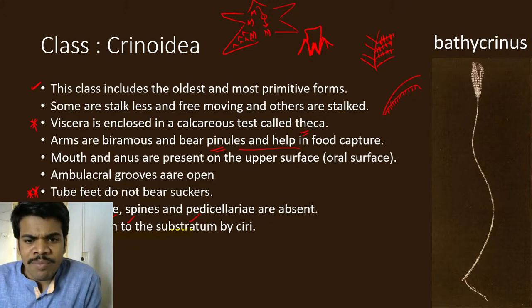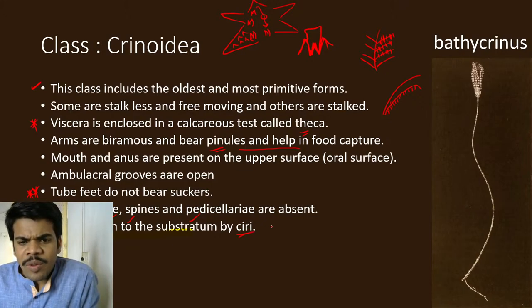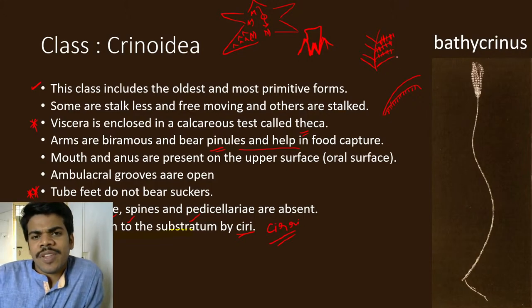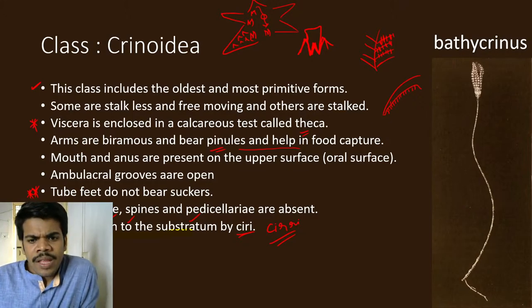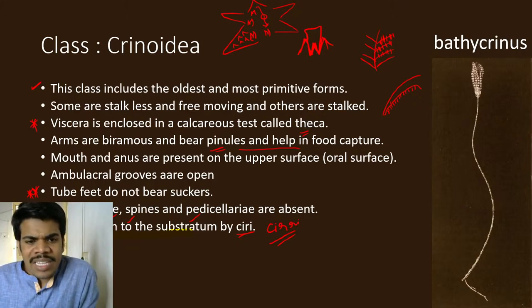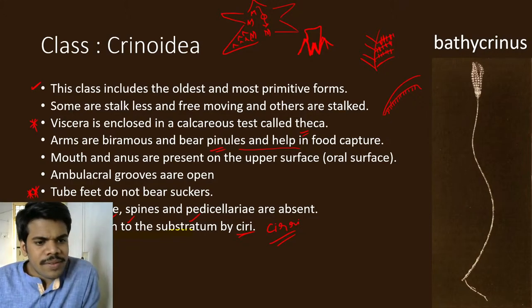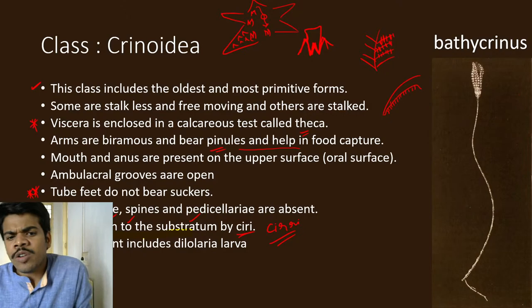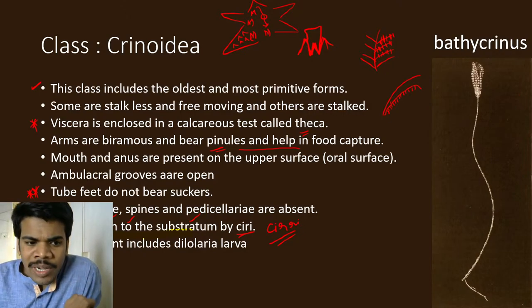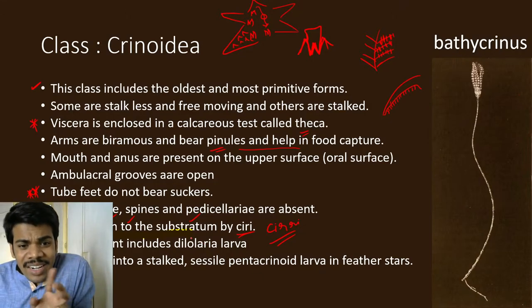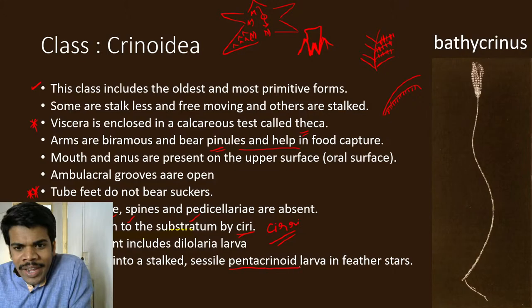Some attach to the substratum by cirri — very, very important. Cirri is a cilia-like or hair-like structure which helps in attachment or movement. Development includes Doliolaria larva, so automatically it is indirect development. The Doliolaria larva is developed into pentacrinoid.